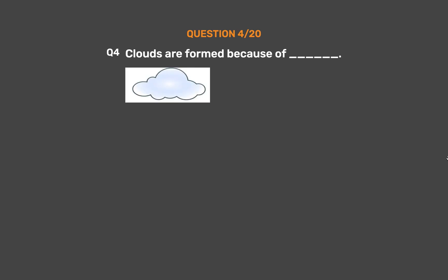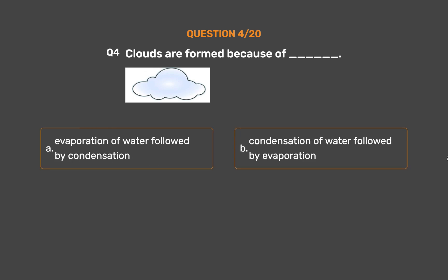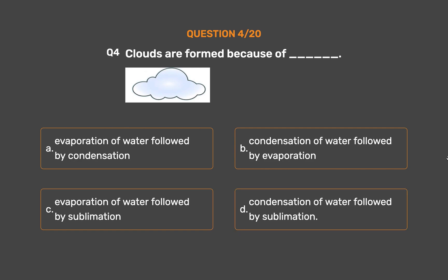Question number 4. Clouds are formed because of _____. Option A: Evaporation of water followed by condensation. Option B: Condensation of water followed by evaporation. Option C: Evaporation of water followed by sublimation. Option D: Condensation of water followed by sublimation.